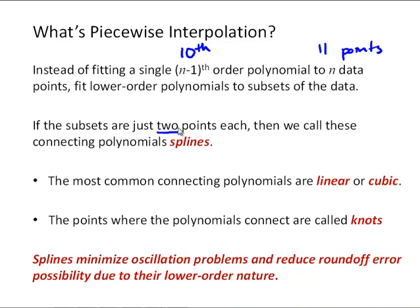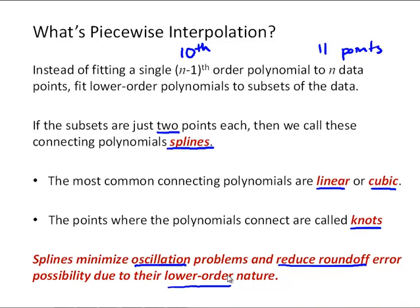If the subsets are just two points each, then we're going to call these connecting polynomials splines. The most common connecting polynomials for spline functions are linear or cubic, and the points where the polynomials connect are called the knot — it's where we're tying these different functions together at the data point. Splines minimize oscillation problems and reduce round-off error because of their lower-order nature. As we increase the order of the polynomial, we increase round-off error and oscillations near the end of our data set. Keeping polynomials lower-order, like cubic, we can avoid those problems.